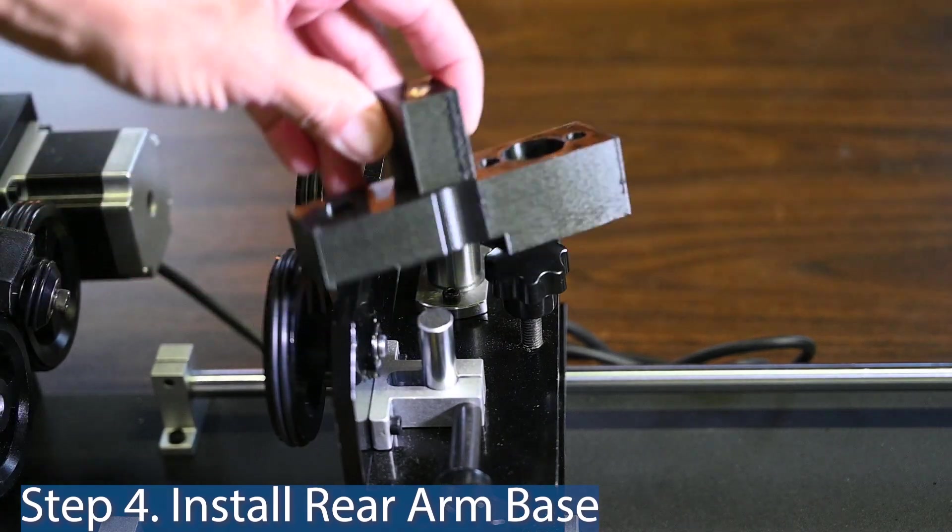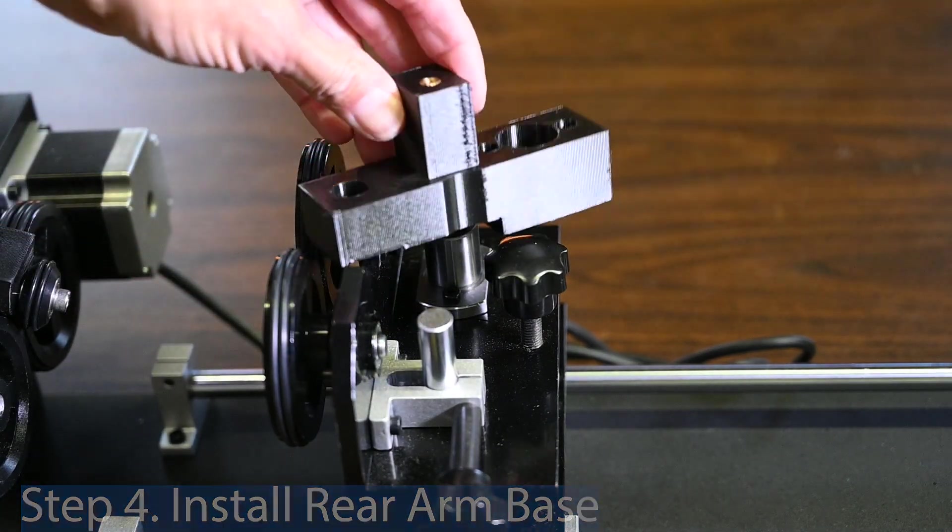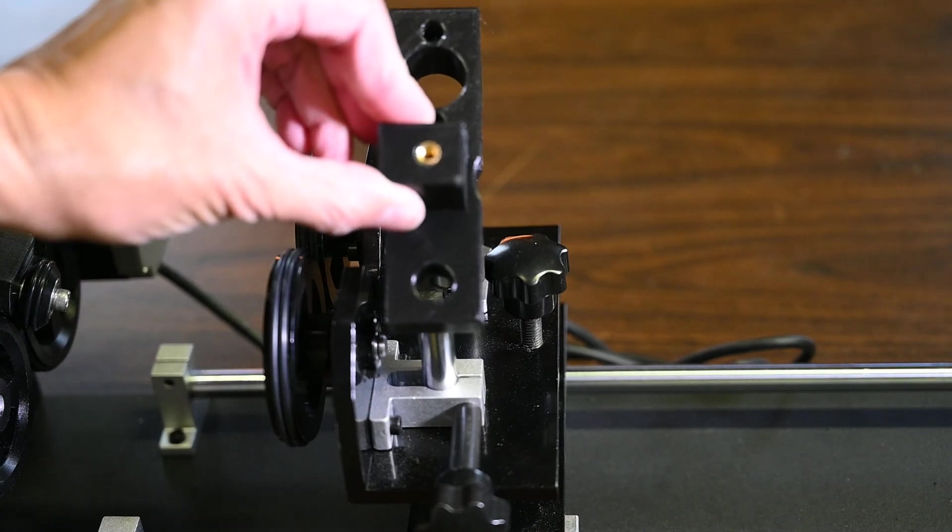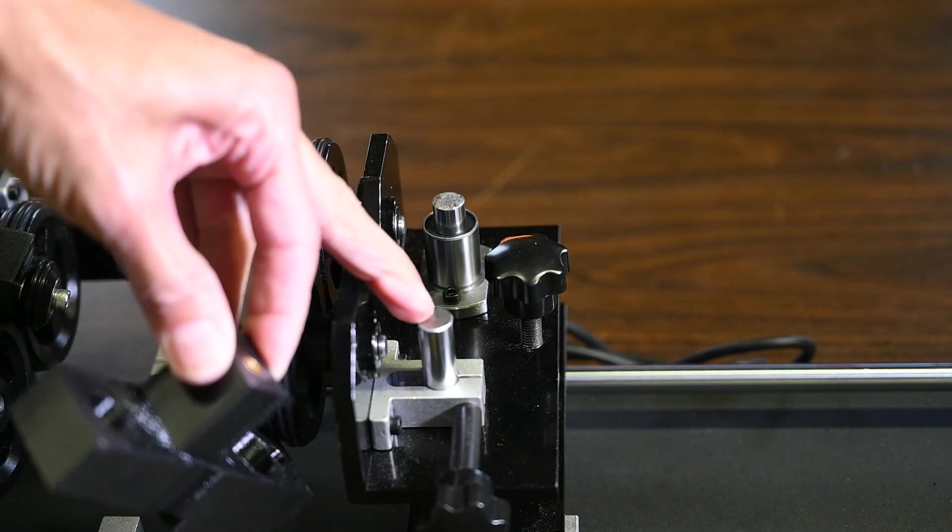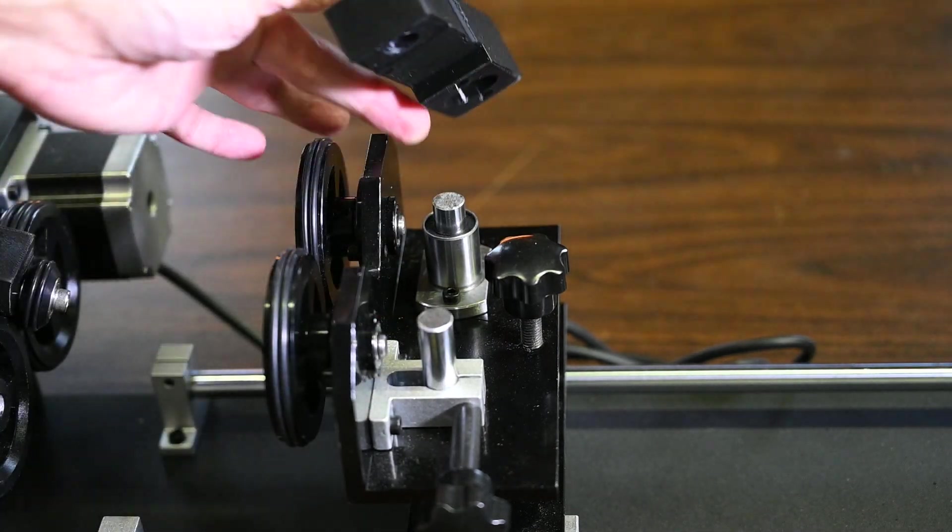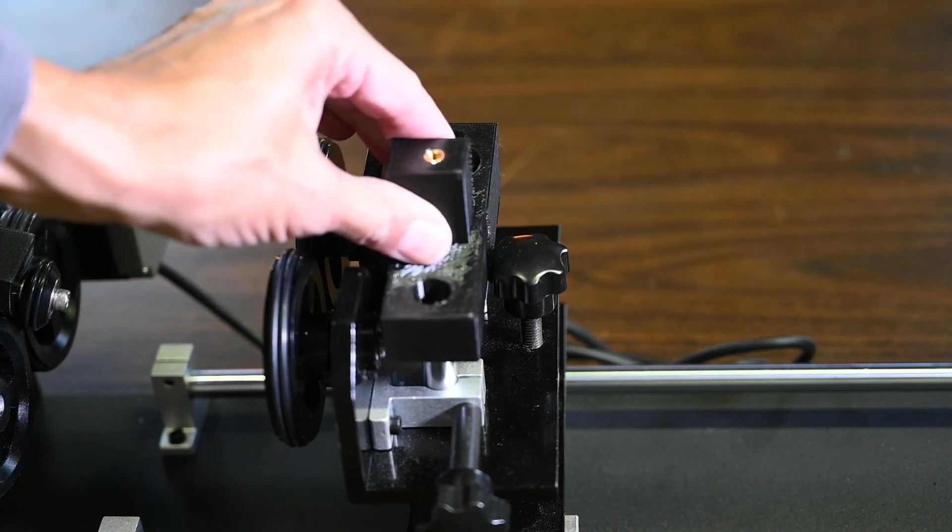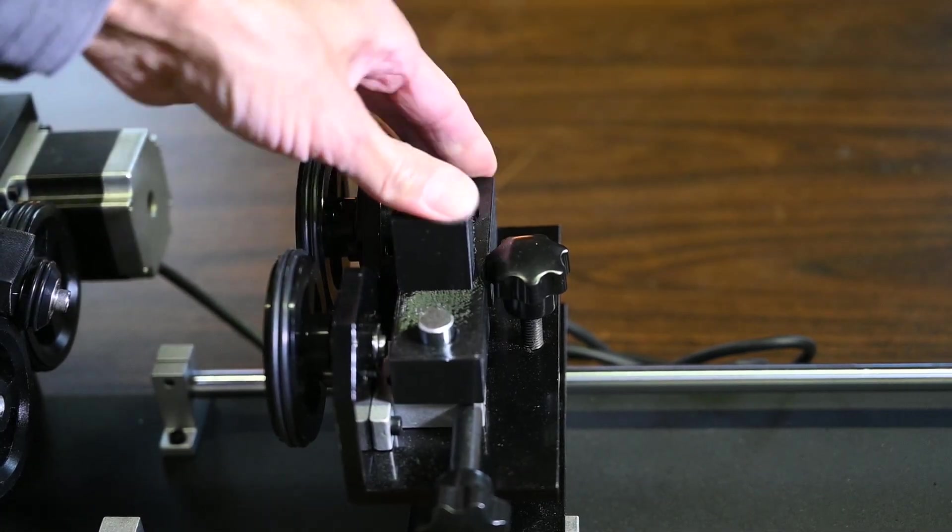Step four is the installation of the rear plate. This will only go in one way as this smaller hole will line up with this rod and the larger hole will line up with this bearing. This simply sits right here.